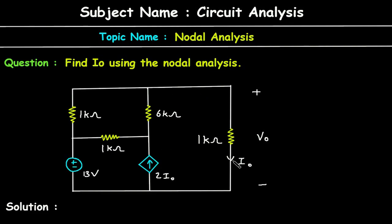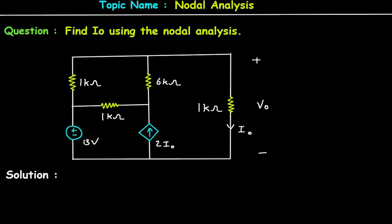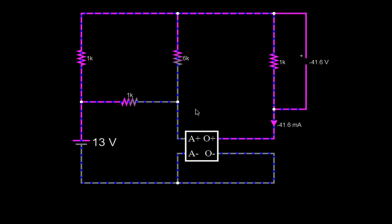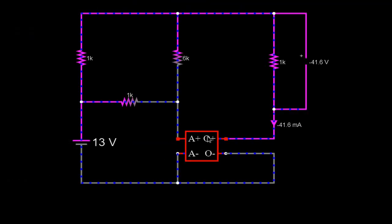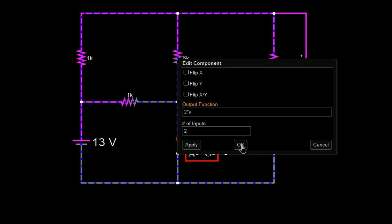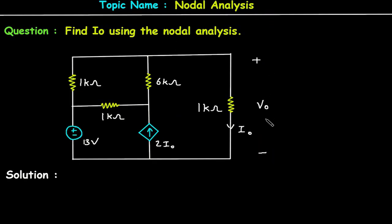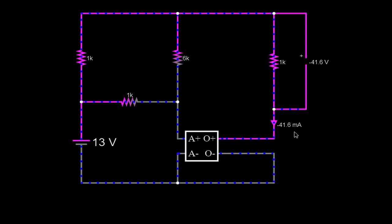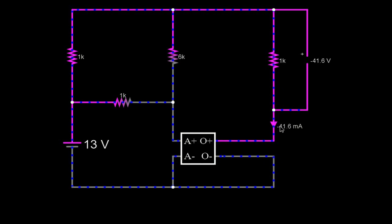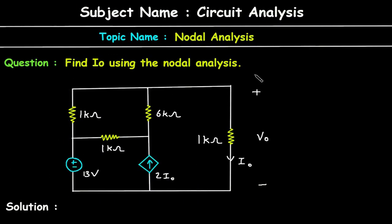Here in this circuit, we have to find IO using nodal analysis. Before finding the solution, here we can see this is our simulator app, and we have made this same circuit. Here this is a current controlled current source, and this is also a current controlled current source. We have to find VO and IO. The value of IO we got is minus 41.6 mA, and this is the value of VO.